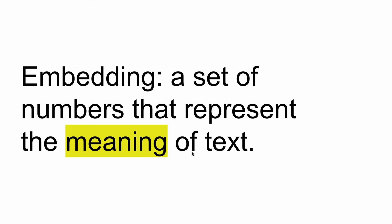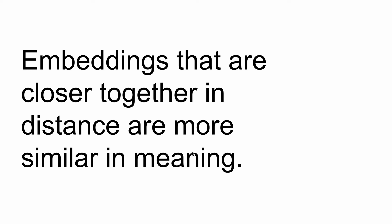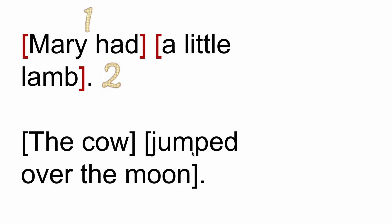I like this definition a lot better because it leads us to an understanding of how you're going to use embeddings — to correlate the meaning between different texts, because embeddings that are closer together in distance are more similar in meaning. This is very easy to understand with a simple example. I've got two sets of text from children's nursery rhymes: 'Mary had a little lamb' and 'the cow jumped over the moon.' We're going to split them into four chunks: chunk one is 'Mary had,' chunk two is 'a little lamb,' chunk three is 'the cow,' and chunk four is 'jumped over the moon.'